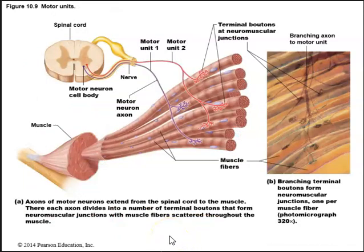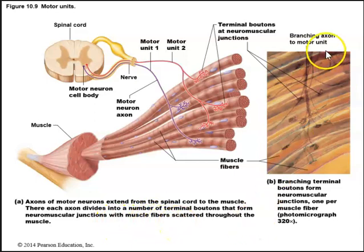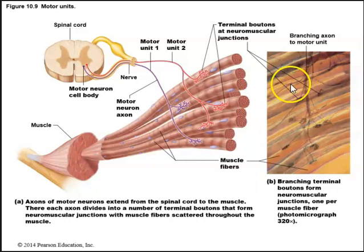Axons of motor neurons extend from the spinal cord to the muscle, where each axon divides into a number of terminal boutons that form neuromuscular junctions with muscle fibers scattered throughout the muscle. We can see in this histology slide the branching axon of a motor unit and terminal boutons at neuromuscular junctions on the muscle fibers.